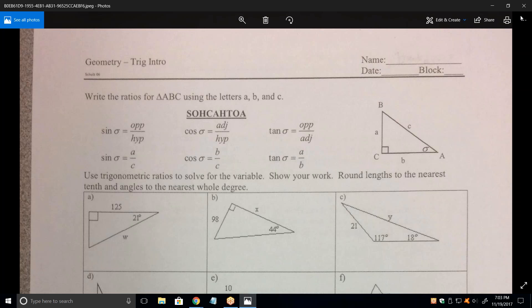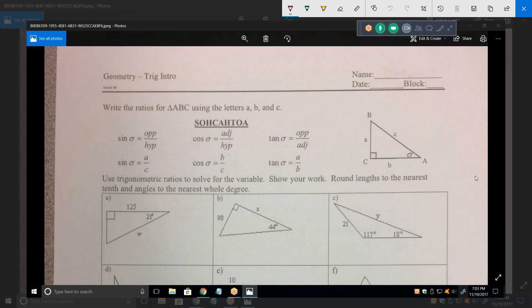This SOHCAHTOA here, you know what that means? Hold on a second. Let me take a screenshot and then write on these things. Do you know what that stands for? That means that the sine is the opposite side over the hypotenuse. That's what SOH means. So if I said the sine of that angle sigma, it would be A over C. So the sine of sigma would be A, the opposite side, over C, the hypotenuse.